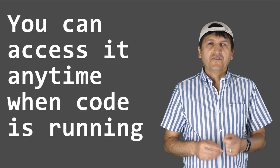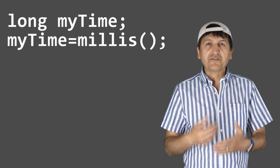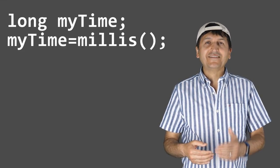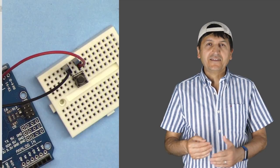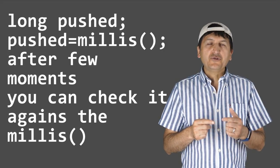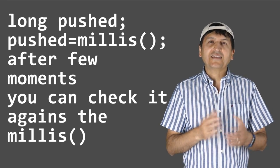Millis can be accessed throughout the code at any point. You can record a start point and a stop point. For example, when a push button is pressed or a temperature increases, you can count from that point until some other event happens. You can save the millis value in a variable and then continuously check until it reaches 5000 milliseconds, or five seconds, then take an action.